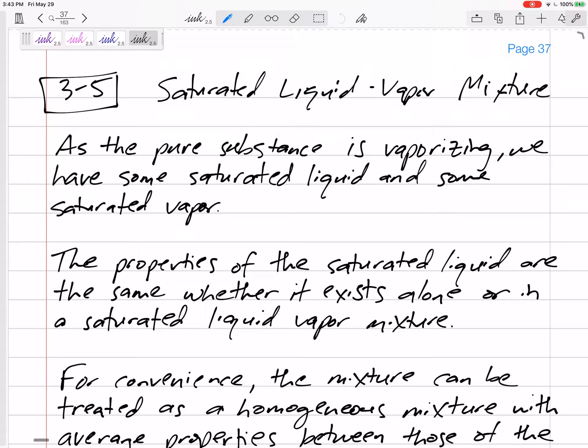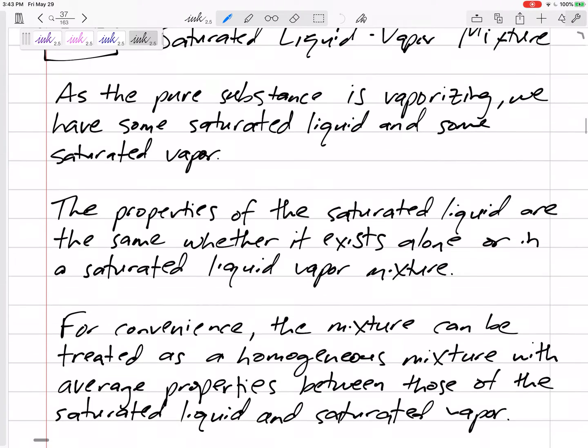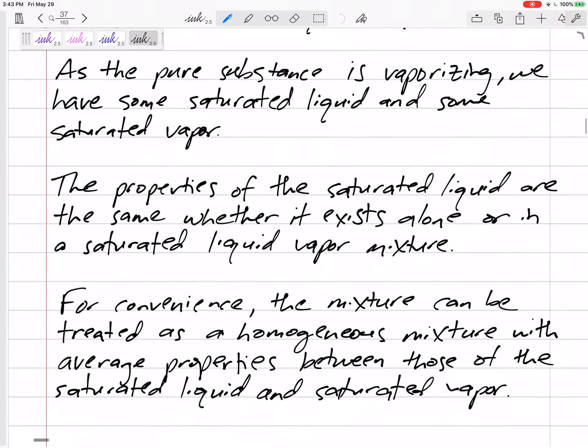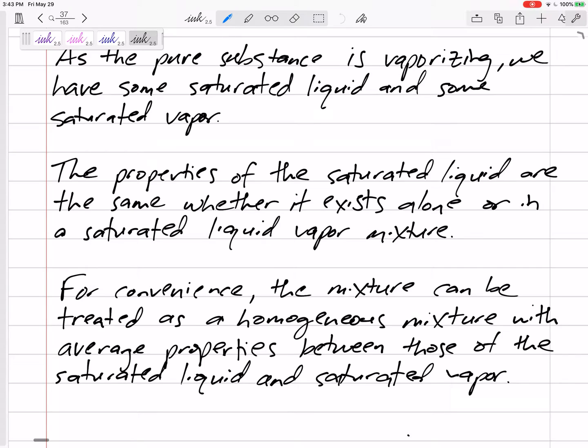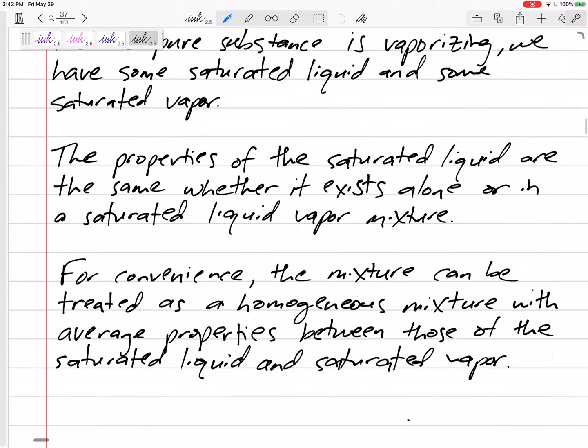What if the pure substance is vaporizing and some of that liquid becomes vapor? Some of the molecules will go straight from liquid to vapor, then a little bit more will go from liquid to vapor, and the properties of the saturated liquid are still the properties of the saturated liquid. The properties of saturated vapor are still the properties of the saturated vapor.